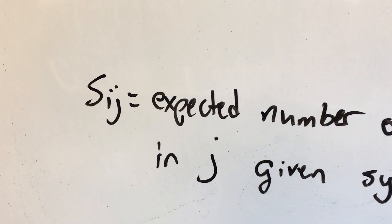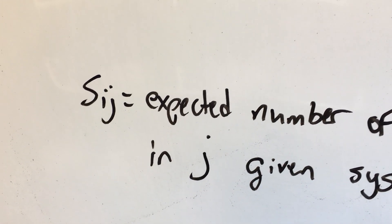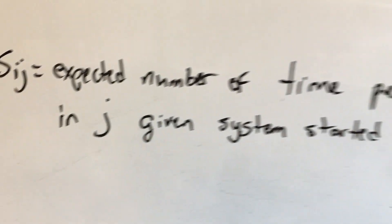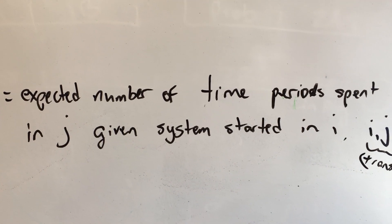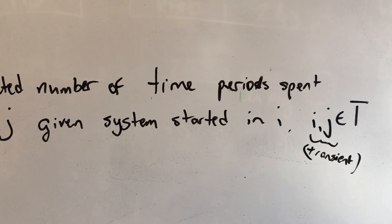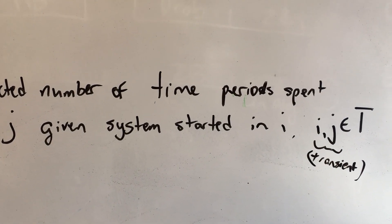Okay, so now we're going to define SIJ. So SIJ is the expected number of time periods that you're going to spend in J, given your system started in state I, when we're talking about transient states I and J.